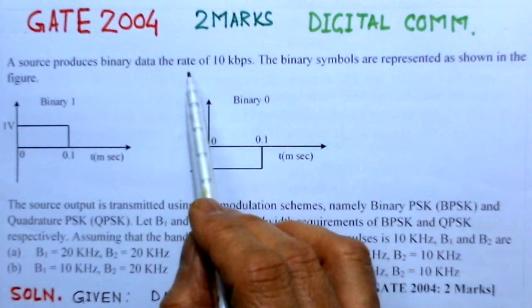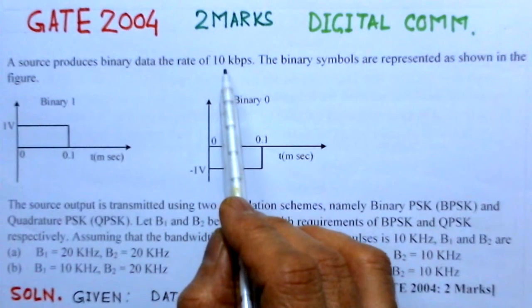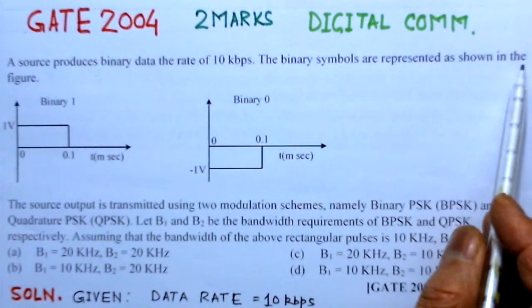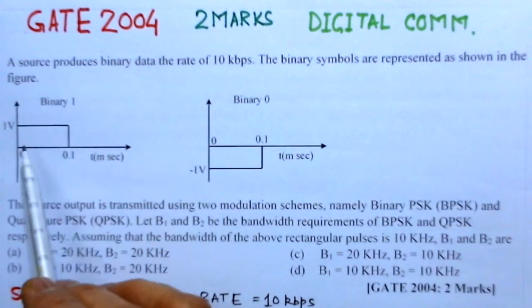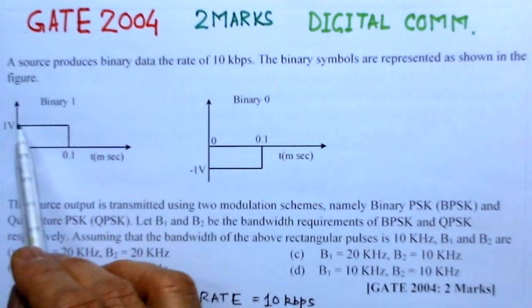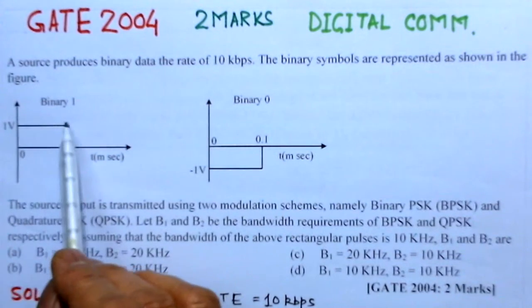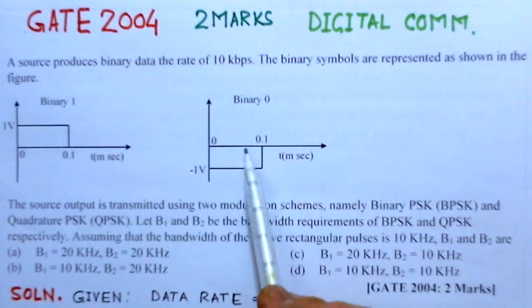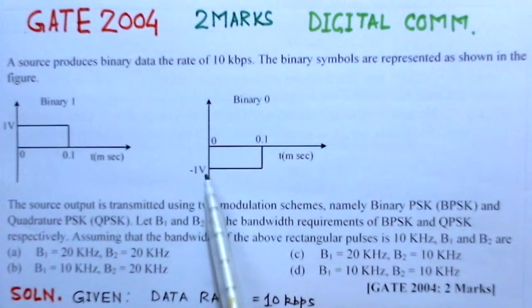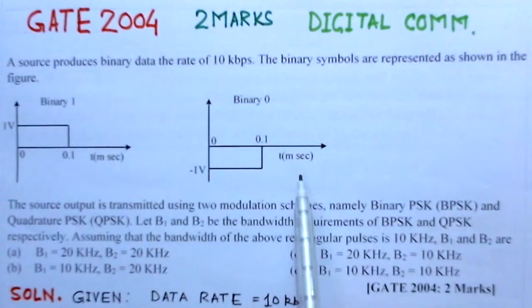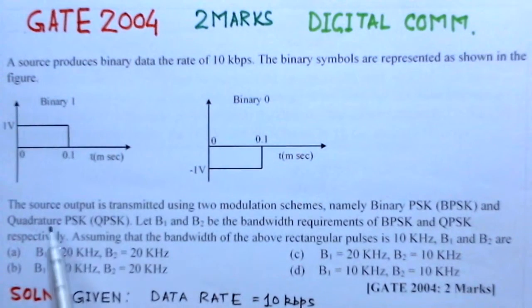A source produces binary data at the rate of 10 kbps. The binary symbols are represented as shown in the figure. These are the representations for the binary symbols - like one is represented with the amplitude of 1 and time of 0.1 milliseconds, and zero is represented as minus 1 voltage and 0.1 milliseconds.